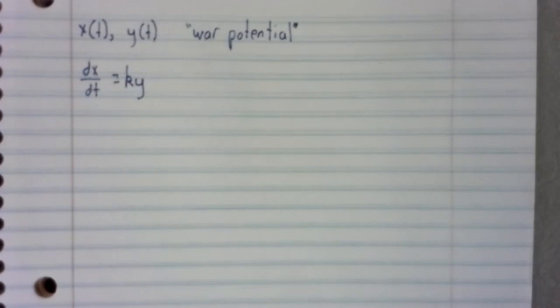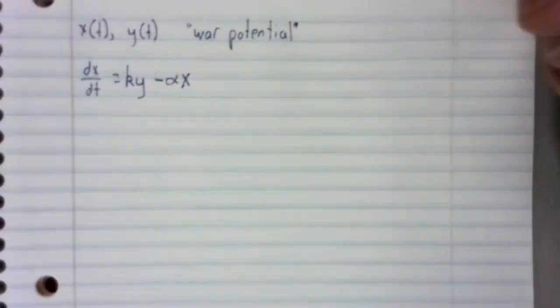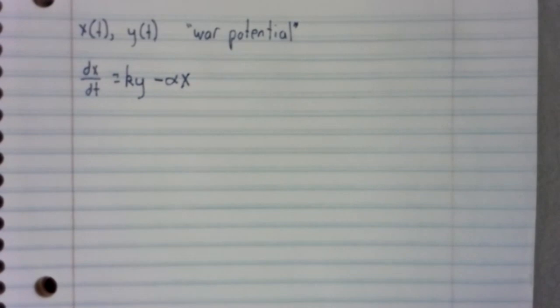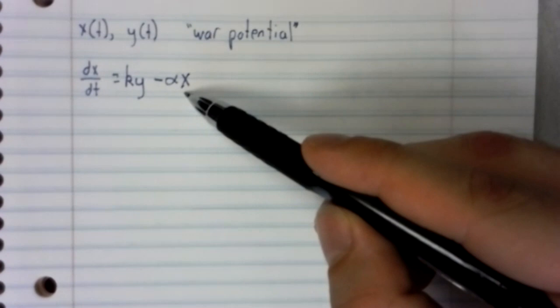There will be a limiting term, negative alpha x. There is only so much money that nation x can devote to building up its military no matter what nation y is doing. So if nation x's military spending is already large, it will grow slowly.